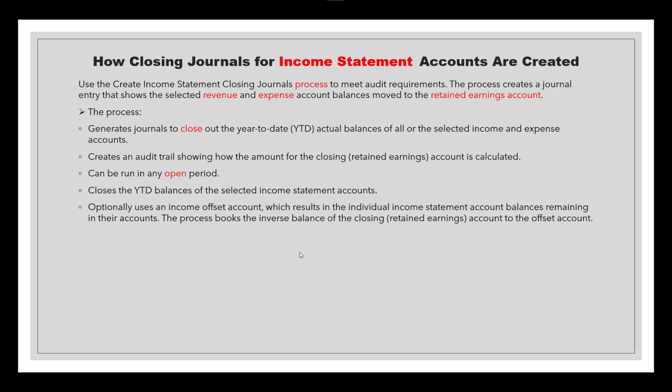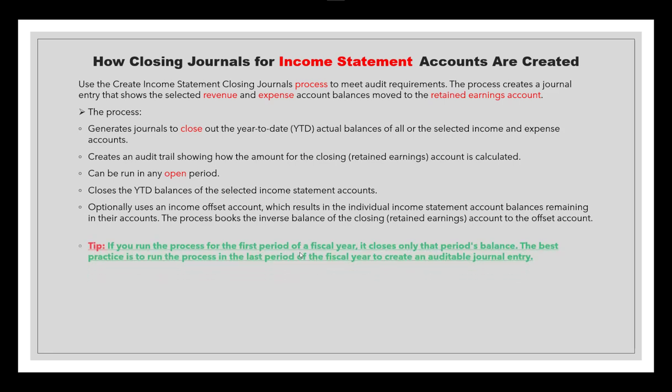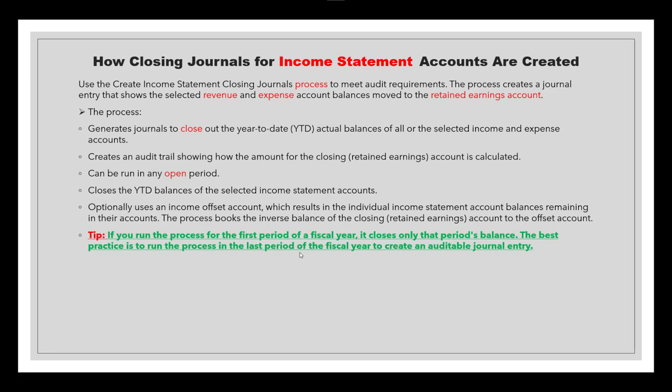Using an offset account is optional — it's not required because by default the system, at the end of each year when the next fiscal year opens, nets revenue and expenses and moves the net balance to the Retained Earning Account. If you run the process for the first period of a fiscal year, it closes only that period's balances. So best practice is to run it in the last period of your fiscal year to create an auditable journal entry — not in the first period of your new fiscal year.